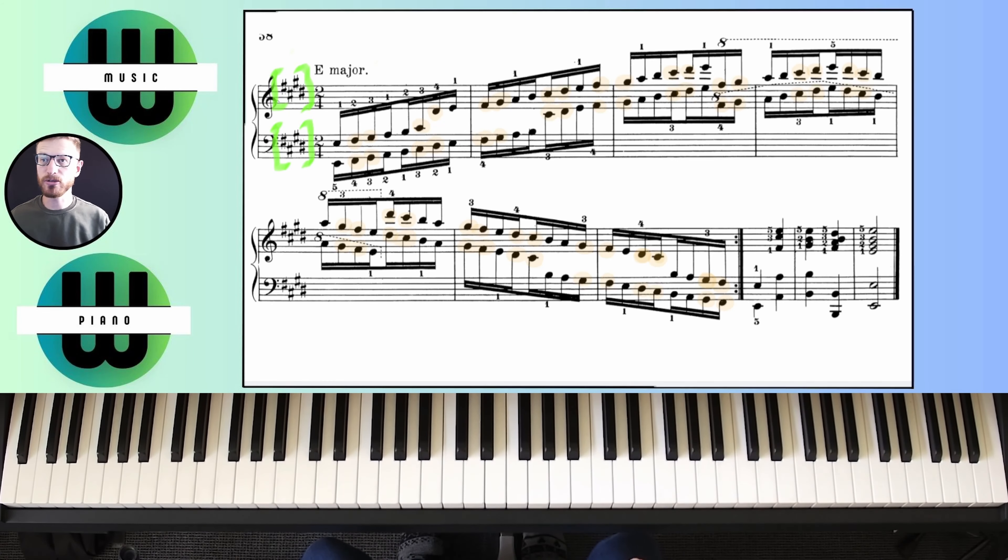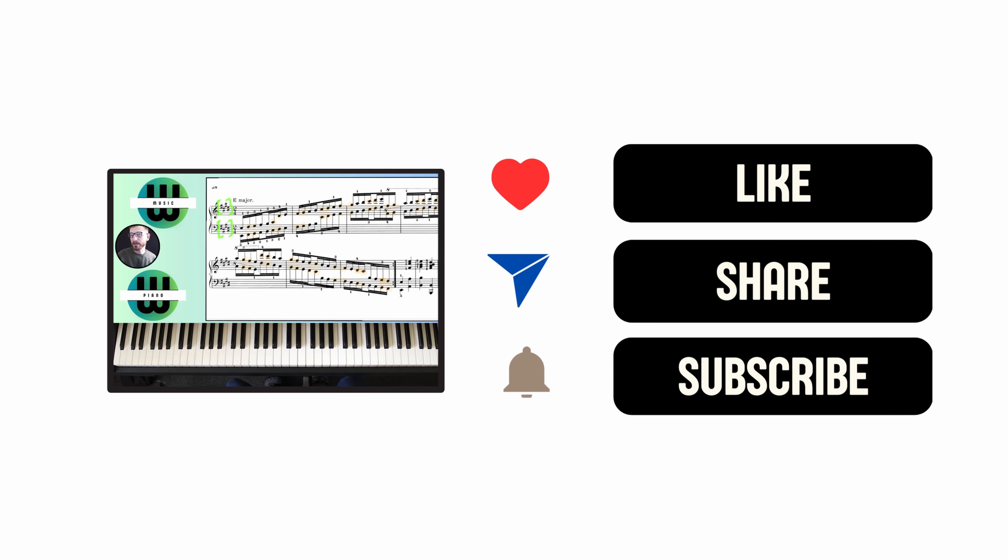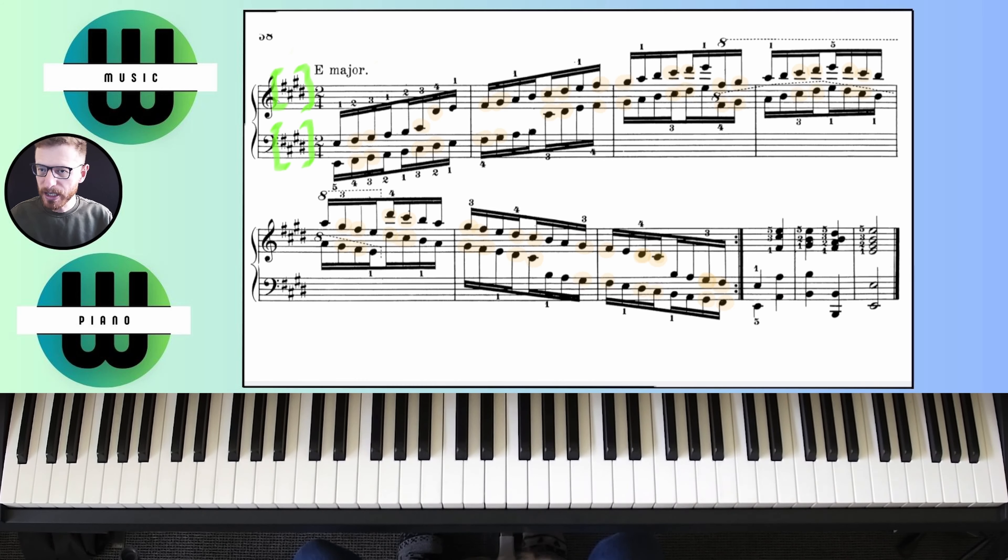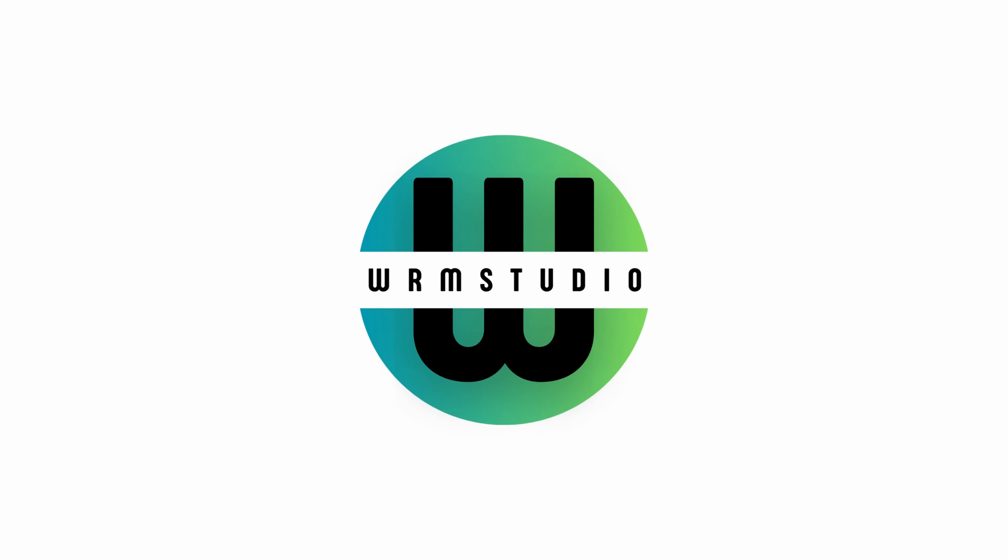I'm back with another scale tutorial. This time we'll be looking at the E major scale. The E major scale only has four accidentals: F sharp, C sharp, G sharp, and D sharp, and it follows a very specific scale pattern which is quite easy to play. Before we start, remember to like the video, subscribe to my channel, and leave a comment if you get it right or if you struggle so that I can offer further assistance.